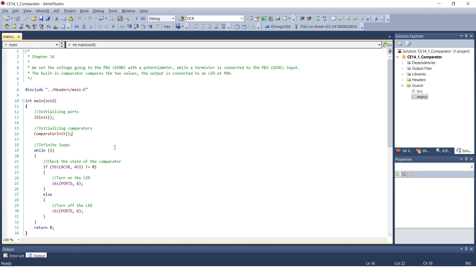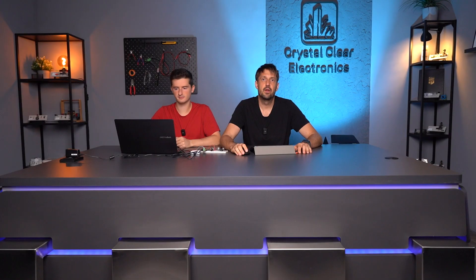The value of the comparator's output is contained in the ACO bit of the comparator status register, which can be read by calling the following function. Upload the code to the microcontroller, and let's test its operation.